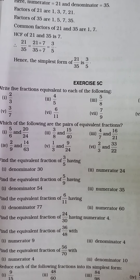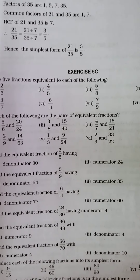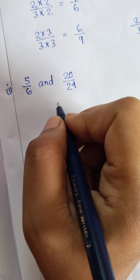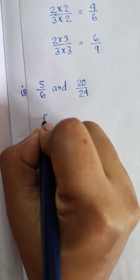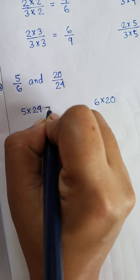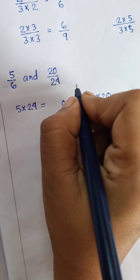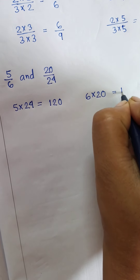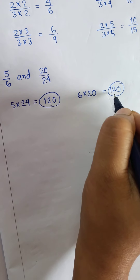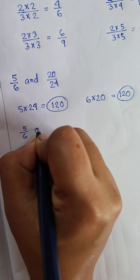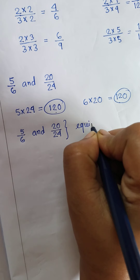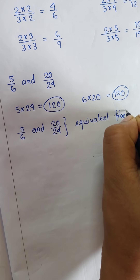Let us take the next one: 5 by 6 and 20 by 24. We have to check whether these two fractions are equivalent or not. We multiply 5 with 24 and 6 with 20. In both cases we get the product 120. So we can say that 5 by 6 and 20 by 24 are equivalent fractions.